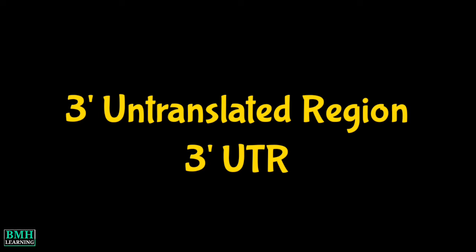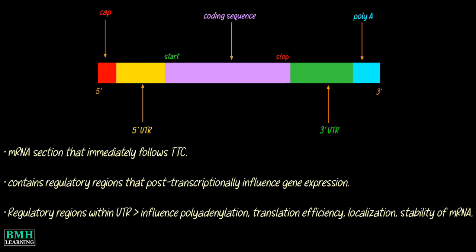Hello friends, welcome to bImageLearning. This video is regarding the 3' untranslated region, or 3' UTR. The 3' UTR is the section of messenger RNA that immediately follows the translation termination codon. The 3' UTR often contains regulatory regions that post-transcriptionally influence gene expression.